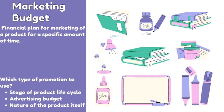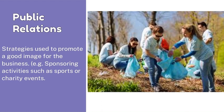Now, let's look at what a marketing budget is. A marketing budget is a financial plan for the marketing of a product for a specific amount of time. To advertise or market a product, there will be many expenses to be incurred, which is why businesses come up with a financial plan — the marketing budget — to know how much needs to be spent. The type of promotion to use will be based on the stage of the product life cycle, the advertising budget, and the nature of the product itself. Public relations are strategies used to promote a good image for the business, like sponsorships — sponsoring activities such as sports or charity events.